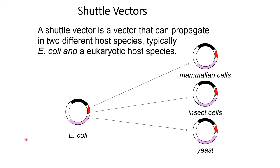This vector can propagate in two different hosts. Usually the prokaryotic host will be E. coli, whereas the eukaryotic host species could be a mammalian cell, insect cell, or yeast. Depending on this, different types of shuttle vectors are formed.